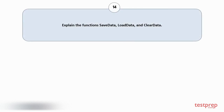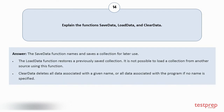Question number 14. Explain the functions Save Data, Load Data, and Clear Data. 1. The Save Data function names and saves a collection for later use. 2. The Load Data function restores a previously saved collection; it is not possible to load a collection from another source using this function. 3. Clear Data deletes all data associated with a given name, or all data associated with the program if no name is specified.